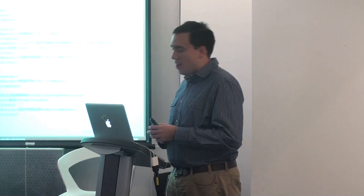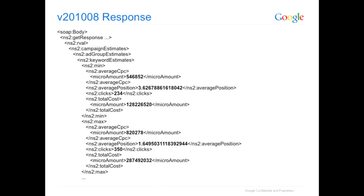What you get back is data in a slightly different format, and actually some new data too. As before, you get average CPC, position, and clicks. You also get a total cost amount, which wasn't returned before. Average position is now reported as a fractional amount — it's a little more detailed. You'll also notice that the minimum and maximum values have been split into two separate objects. Before, uppers and lowers were together; now there are two separate objects holding your min and max, but they're in the exact same format.